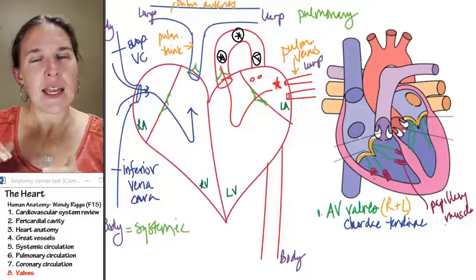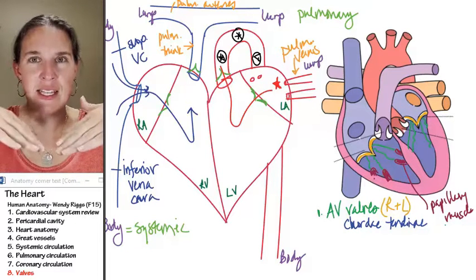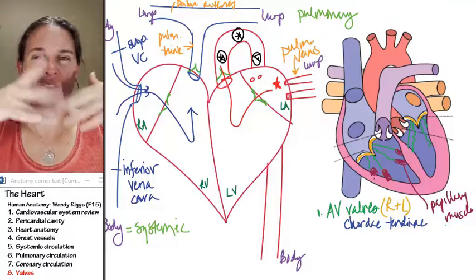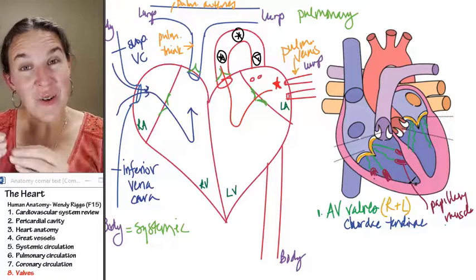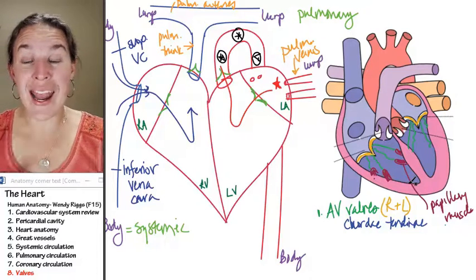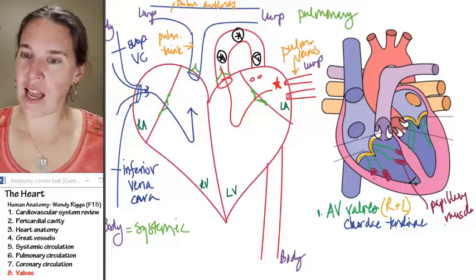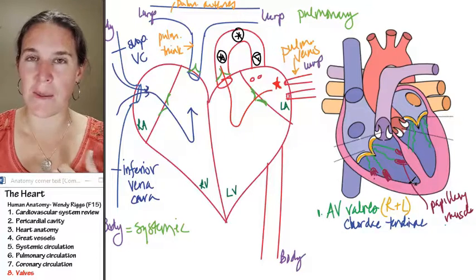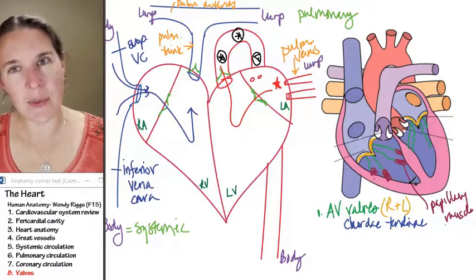But if you didn't have them, if you didn't have the chordae tendinae attached to these things, they would flap backwards because they're just kind of a little too floppy. And so the papillary muscles and the chordae tendinae hold onto and anchor the AV valves. Do semilunar valves have chordae tendinae and papillary muscles attached to them? No, no, no.